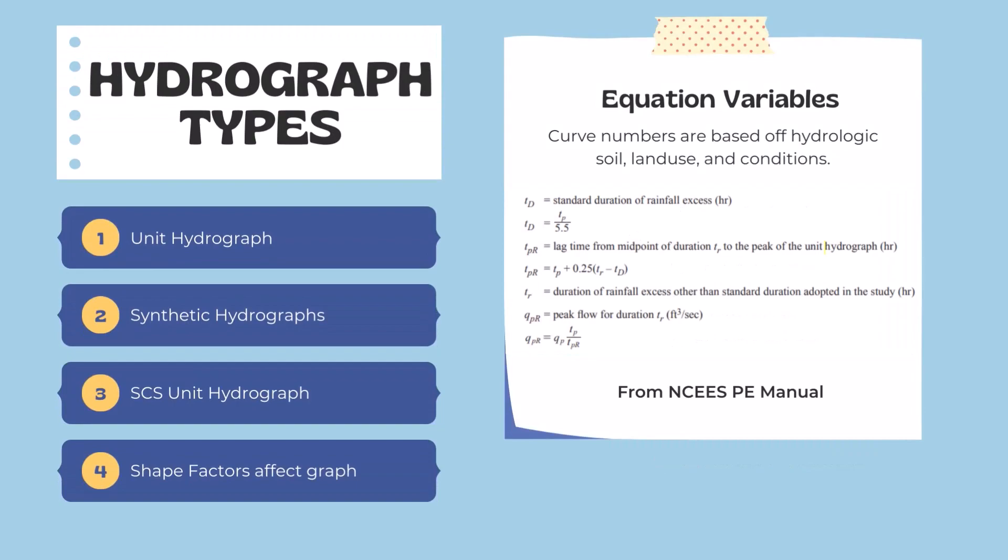For different hydrograph types we can see this unit synthetic SCS with different shape factors. Here are some additional equations for determining hydrograph characteristics. The standard duration of rainfall equals tp over 5.5, the lag time from the midpoint of duration, the duration of rainfall excess other than the standard duration adopted in a study, and the peak flow for duration.